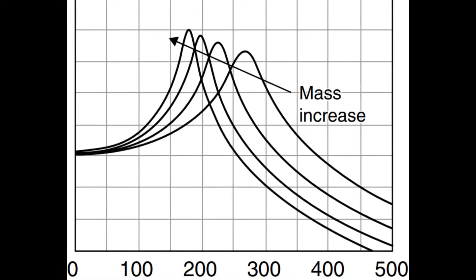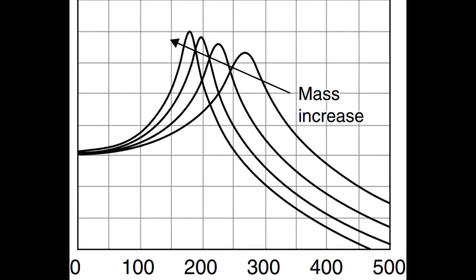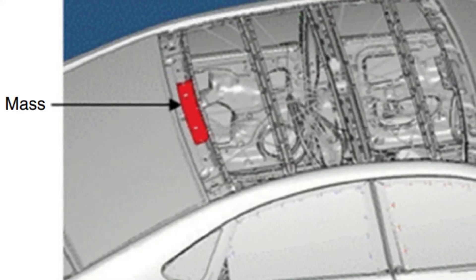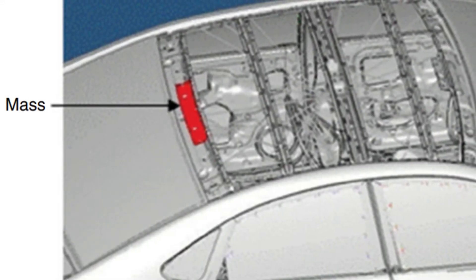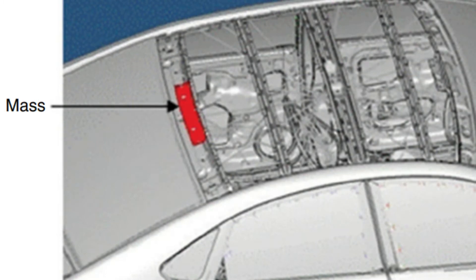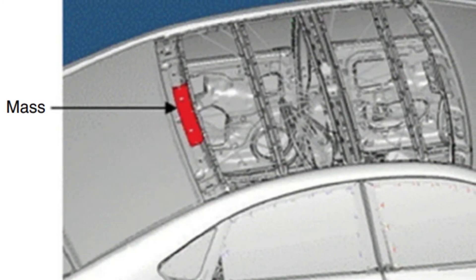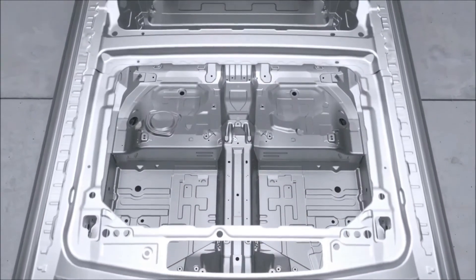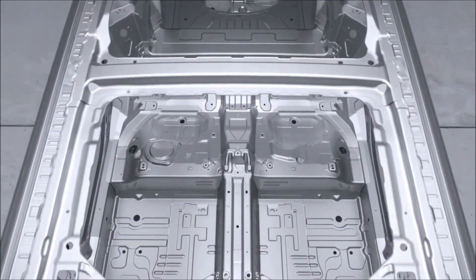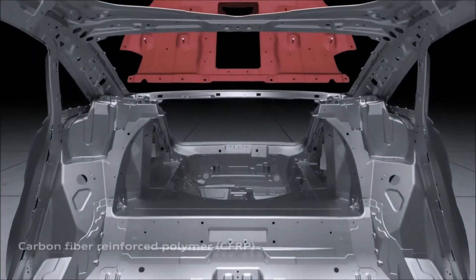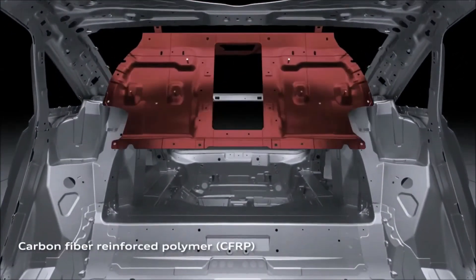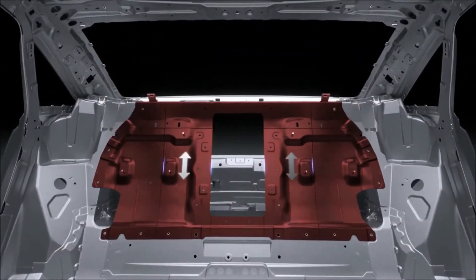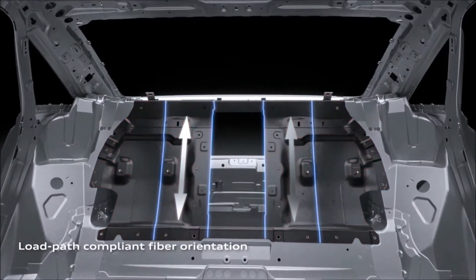Similarly, decreasing the natural frequency is accomplished by increasing the mass, because decreasing the stiffness may lead to excessive movement of parts and heating with the surrounding parts.